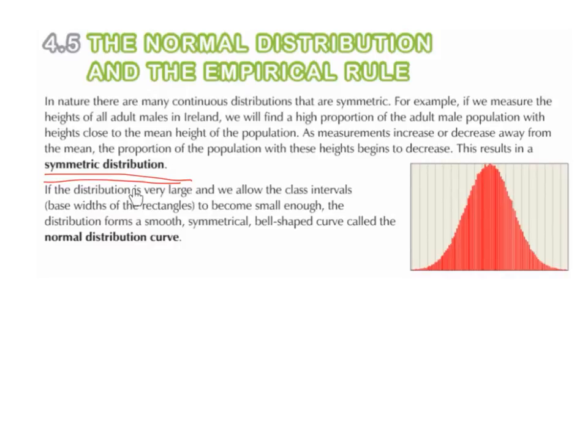If the distribution is very large and we allow the class intervals, which are the base widths of the rectangles, to become small enough, the distribution forms a smooth, symmetrical, bell-shaped curve called the normal distribution curve.